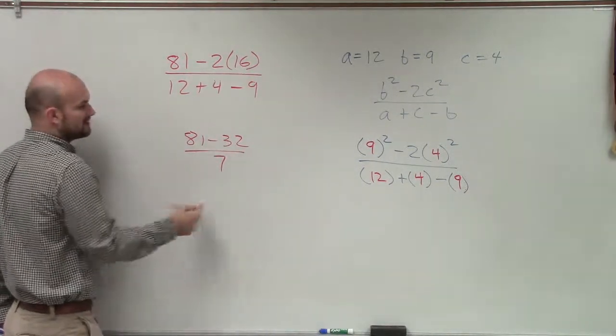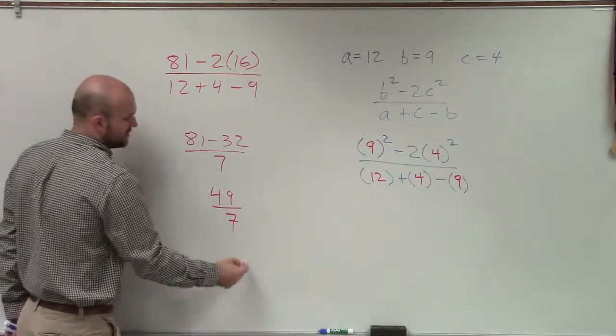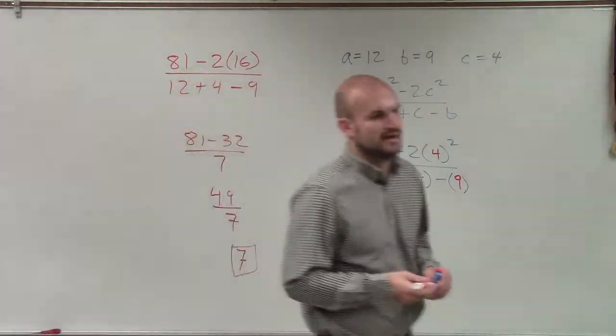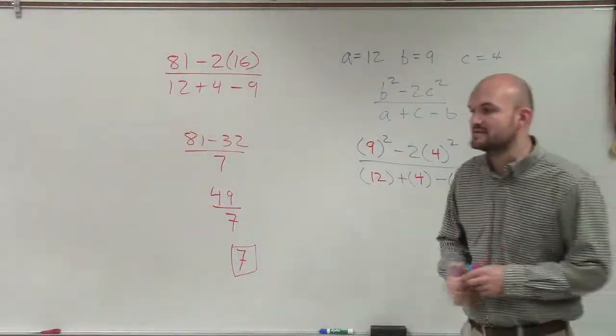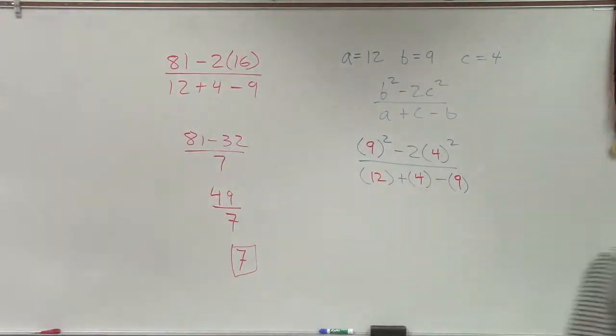Well, 81 minus 42 is 49, divided by 7. And 49 divided by 7 equals 7. So that should have been your final answer. All right, again, if you made a mistake, even a small little mistake or a major mistake, make sure you guys write down the correct solution for that.